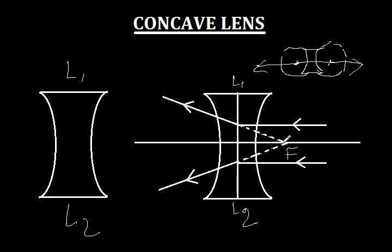The principal focus of the concave lens is defined as a point on the principal axis outside the lens from which the rays of light appear to diverge after being refracted by the lens. If a parallel beam of light is refracted by a concave lens, the rays appear to diverge from this point outside the lens, which is the principal focus.